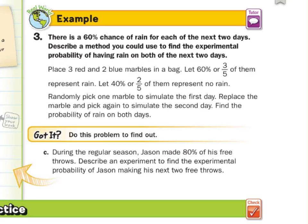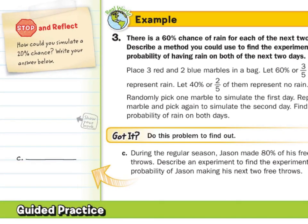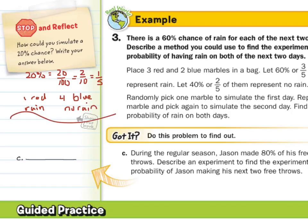If we look at our stop and reflect question here, how could you simulate a 20% chance? Well, what if in that bag we had, first off, 20% is 20 over 100. We could put 100 marbles in a bag, but that's not very realistic either. This simplifies to two-tenths, which is one-fifth. So if we put in one red marble to represent the 20%, and the other four-fifths, the other four marbles could be blue, so that the one red would be rain, the four blue would be no rain, and you could run the same experiment that was run over here.